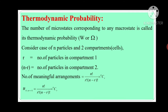Now, consider the case of n particles, and we have to arrange these n particles into two compartments or cells. Here, small r is the number of particles in compartment one, and n minus r is the number of particles in compartment two. The number of meaningful arrangements is n factorial upon r factorial into n minus r factorial, which equals nCr. Therefore, its thermodynamic probability is given by n factorial upon r factorial into n minus r factorial, equal to nCr.